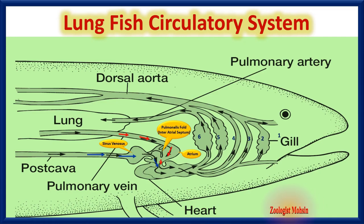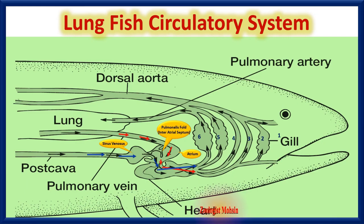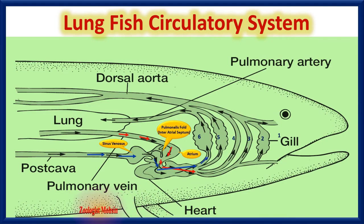When both oxygenated and deoxygenated blood enter the ventricle, it quickly pumps them into the conus arteriosus. The folds of the conus arteriosus play a vital role here — they supply oxygenated and deoxygenated blood to different tubes. Deoxygenated blood is sent toward the last two gill arches.